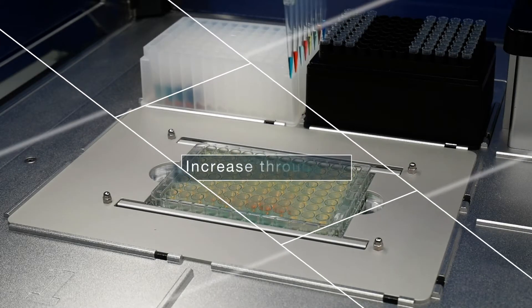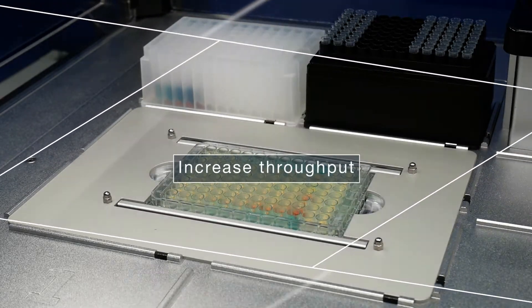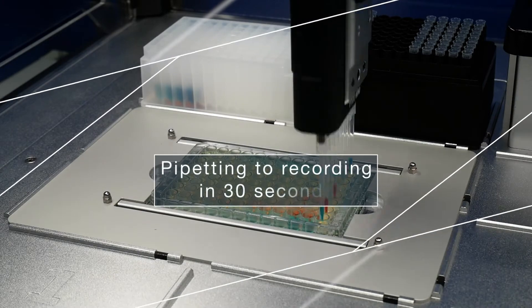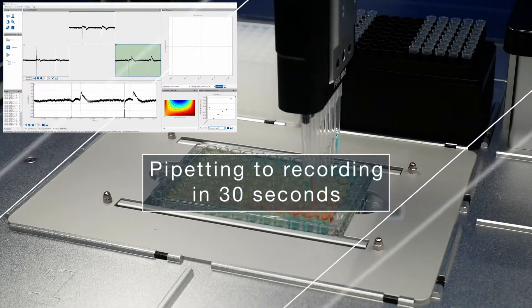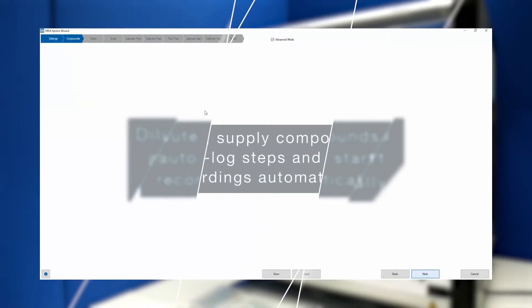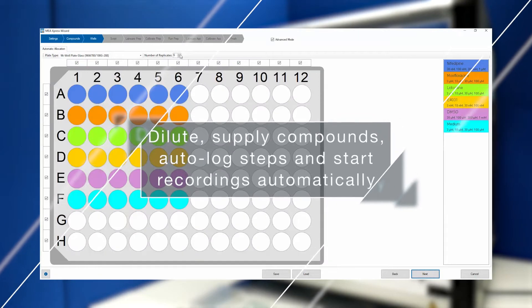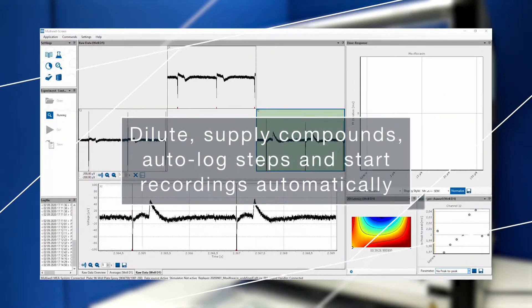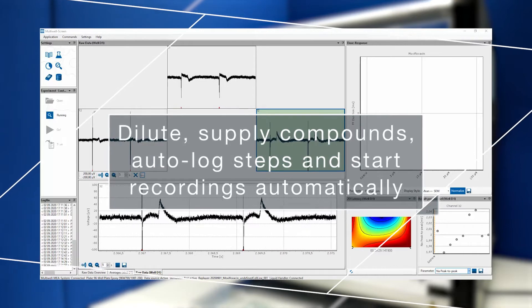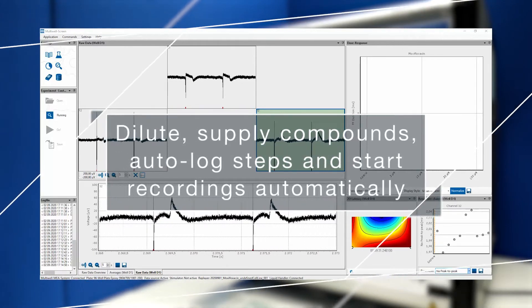With MEA Express, you can increase your experimental throughput from pipetting to recording in 30 seconds. You can also dilute, supply compounds automatically to the Multi-Well MEA amplifier, auto-log all steps, and start programmed recordings automatically.